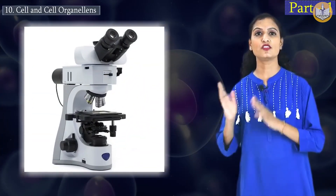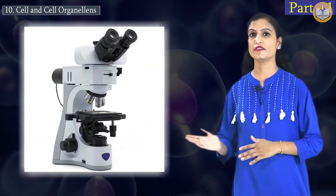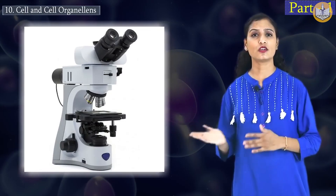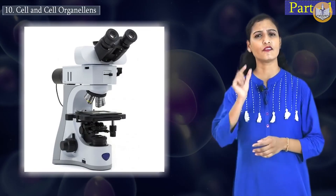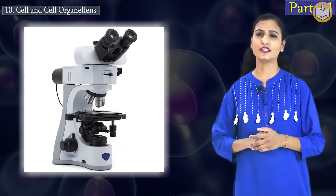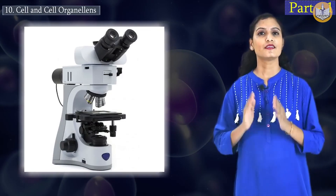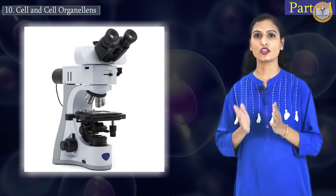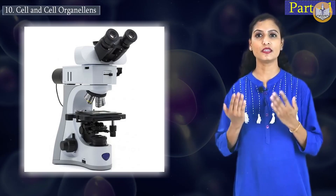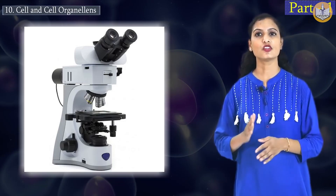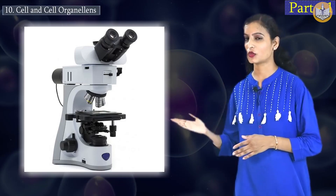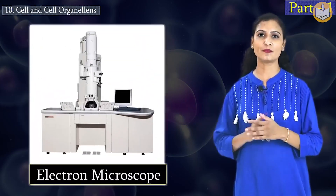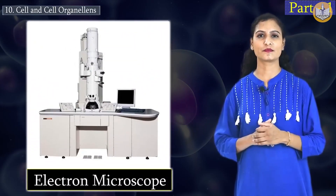Microscope is used for the observation of cells because cells are very small in nature. Some living organisms cannot be seen with the naked eye, so we use a microscope or an electron microscope.